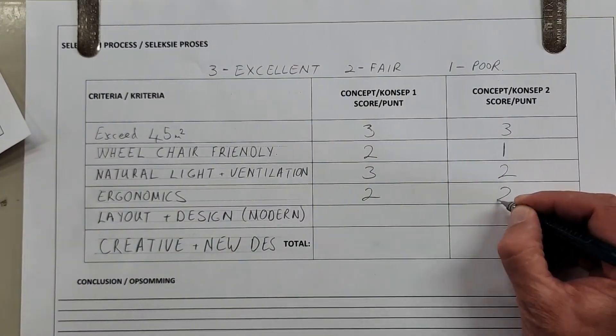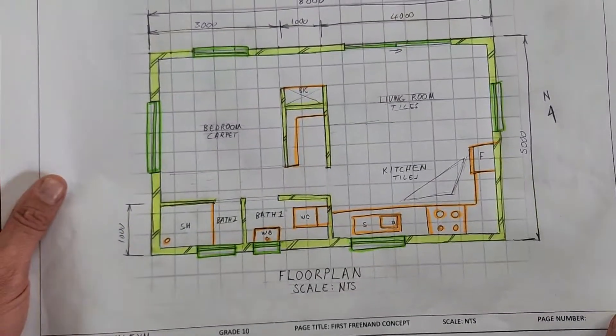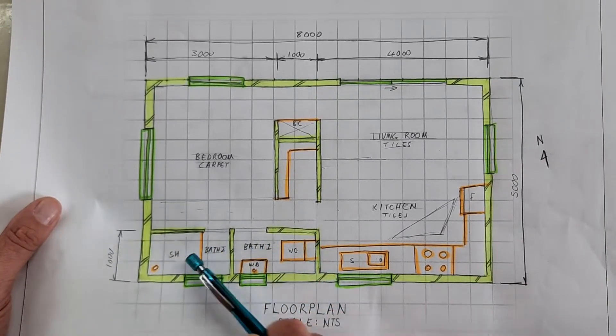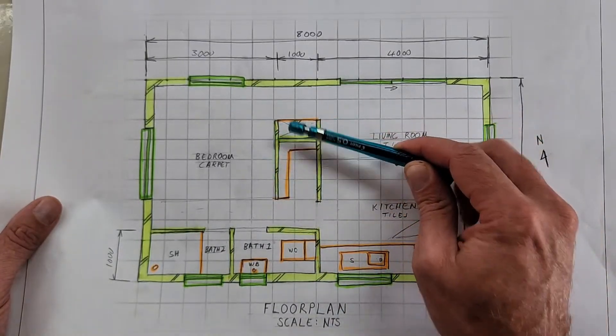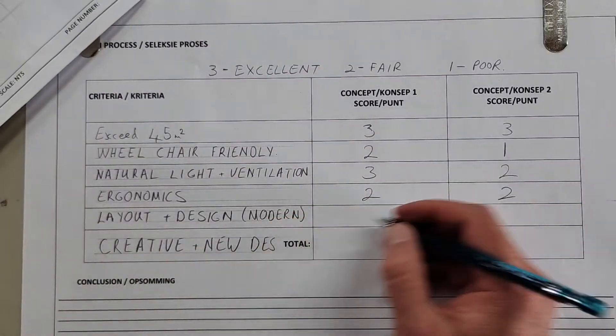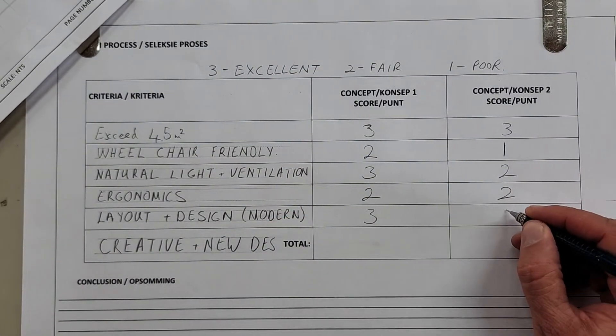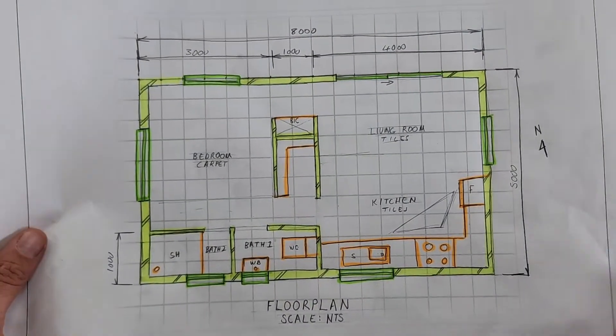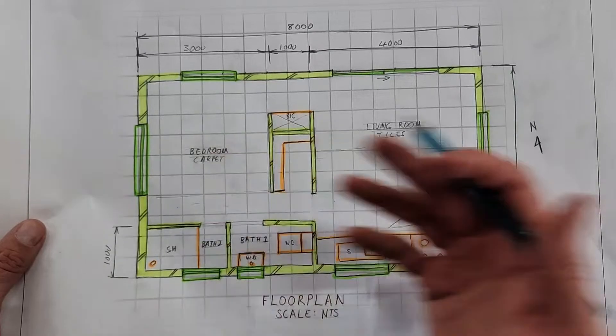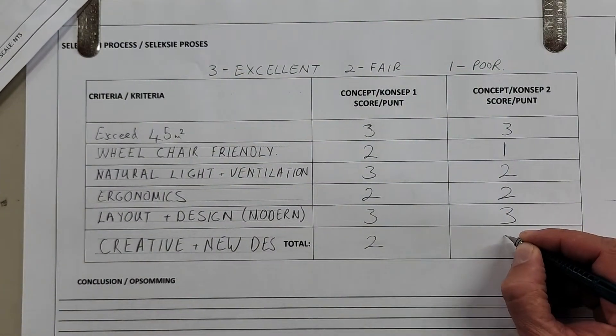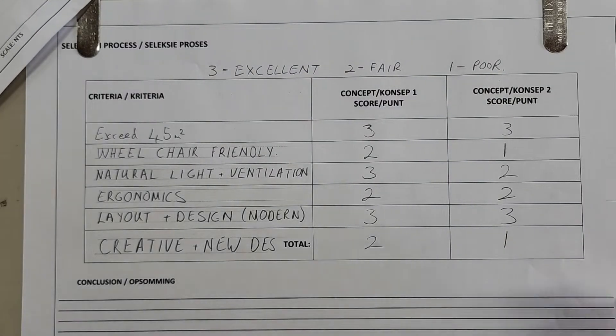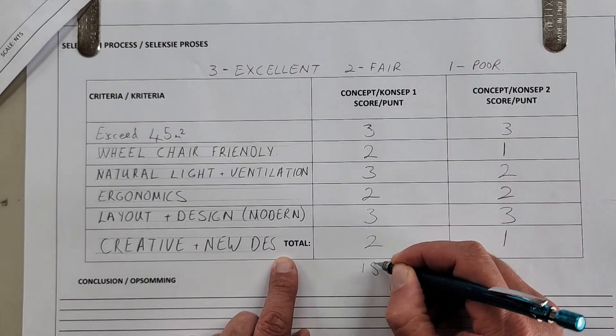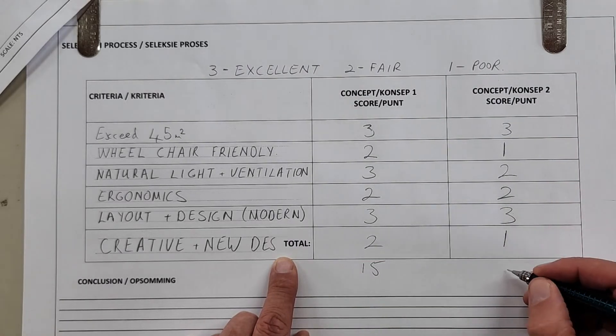Layout and design. This is a very modern layout. I don't think many of you've seen a bathroom that spread in two parts like this. We were creative here using the wall between the bedroom and the living room with built-in cupboards. So here also I would say layout and design three out of three. Then I'm looking at something that's creative and that's new. It's creative in some ways but it might not be in others, so let's give ourselves a two here. Then we're going to add all of that up. So our concept is concept number one that we've selected.